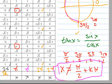Now, tangent and secant are kind of the same because they are undefined in those same locations. So the domain we just found for tangent is also the domain for the secant.